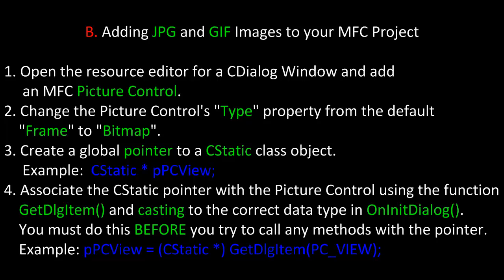However, it's a little bit more involved. Like the first method, we start out by adding a picture control to our CDialog from the toolbox. Once we do this, we'll change the picture control's type property from the default frame to bitmap. Third, we'll create a global pointer to a CStatic class object, just like we did before. Fourth, we'll associate the CStatic pointer with the picture control using GetDialogItem and casting it to the correct data type in OnInitDialog. All of that so far is pretty much the same.